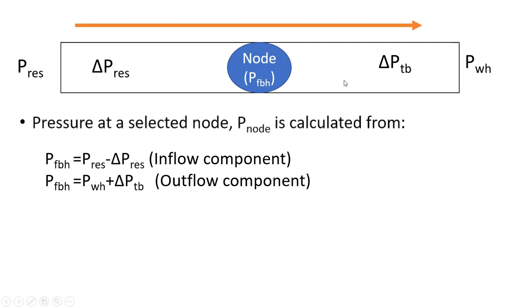Looking at the downstream component — the wellbore — the fluid is flowing from the bottom hole to the wellhead, meaning the pressure at the bottom hole must be greater than the pressure at the wellhead. Maintaining the example of 2,500 PSI at the bottom hole and a wellhead pressure of 500 PSI, there is a change in pressure of 2,000 PSI within this component. So to get the bottom hole flowing pressure considering the outflow component, we take the wellhead pressure plus the change in pressure in the tubing, which gives us our bottom hole flowing pressure.